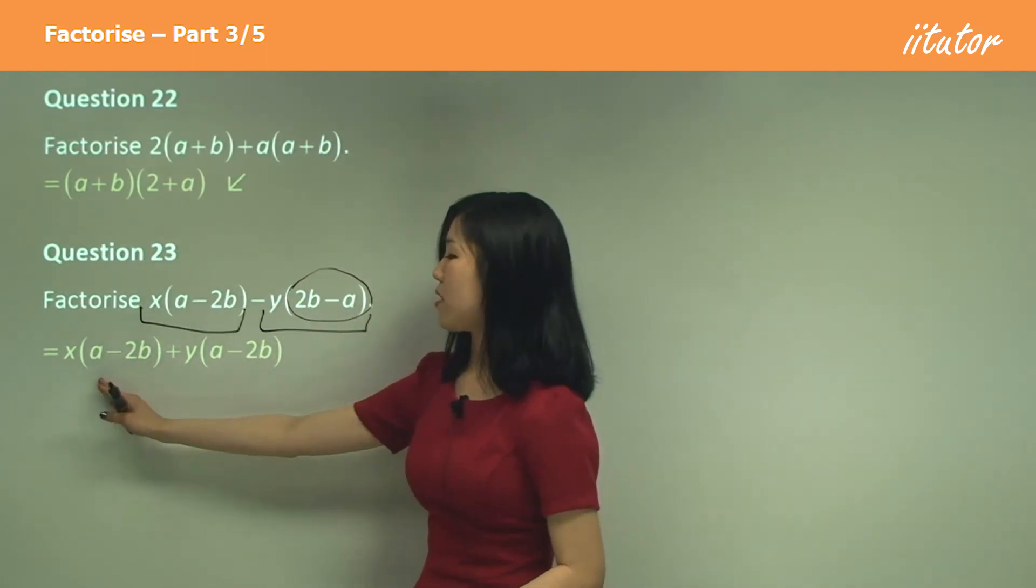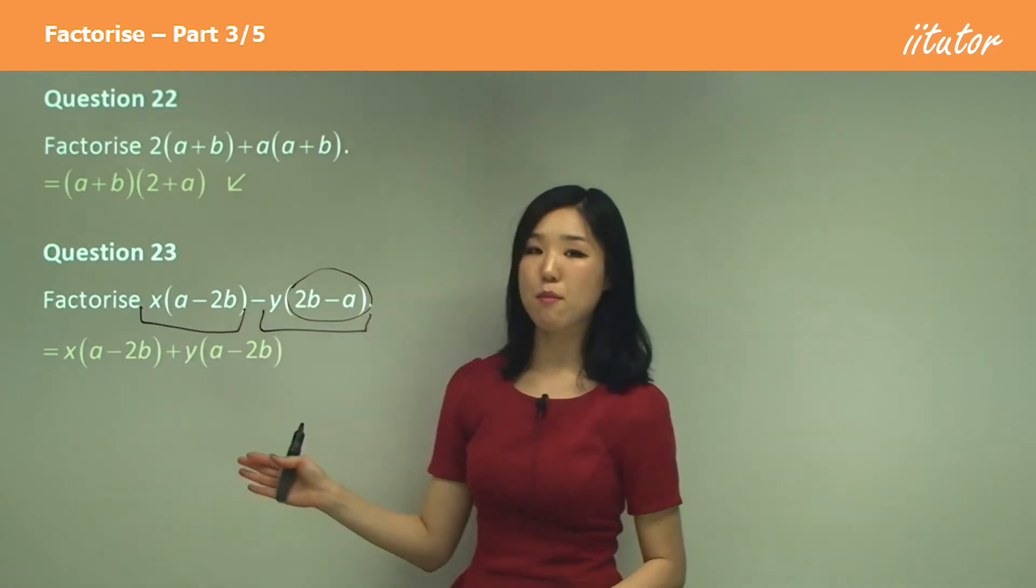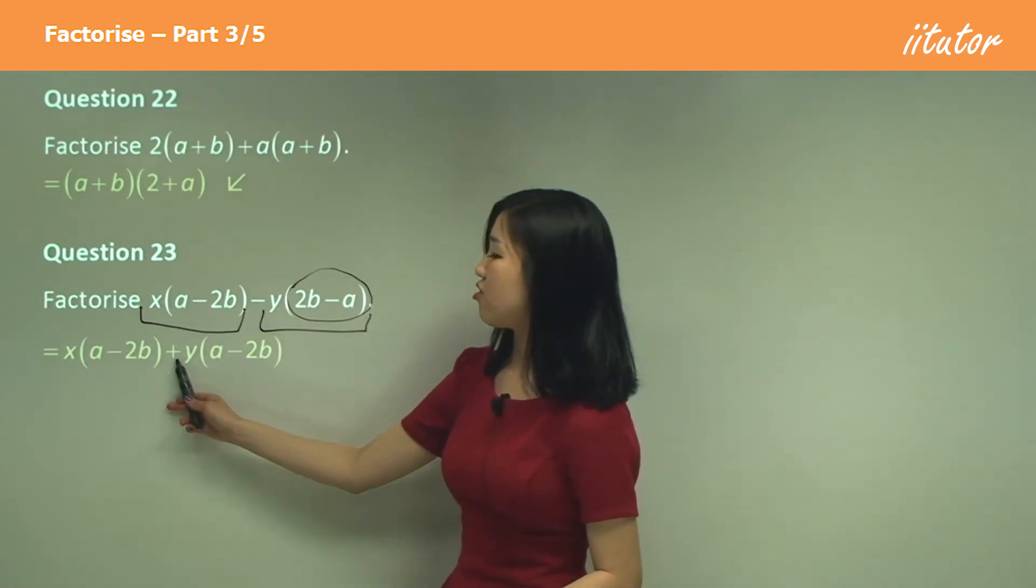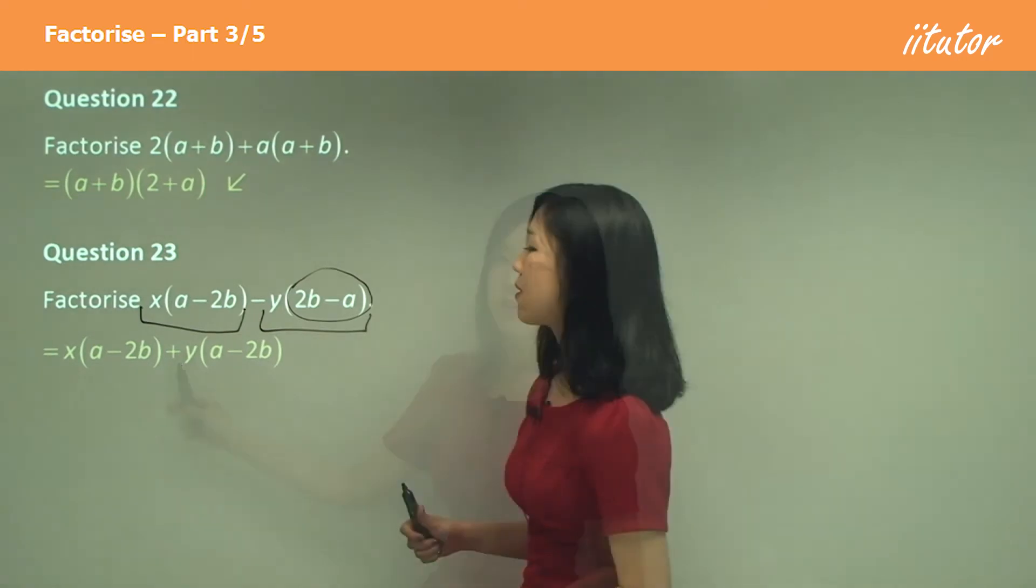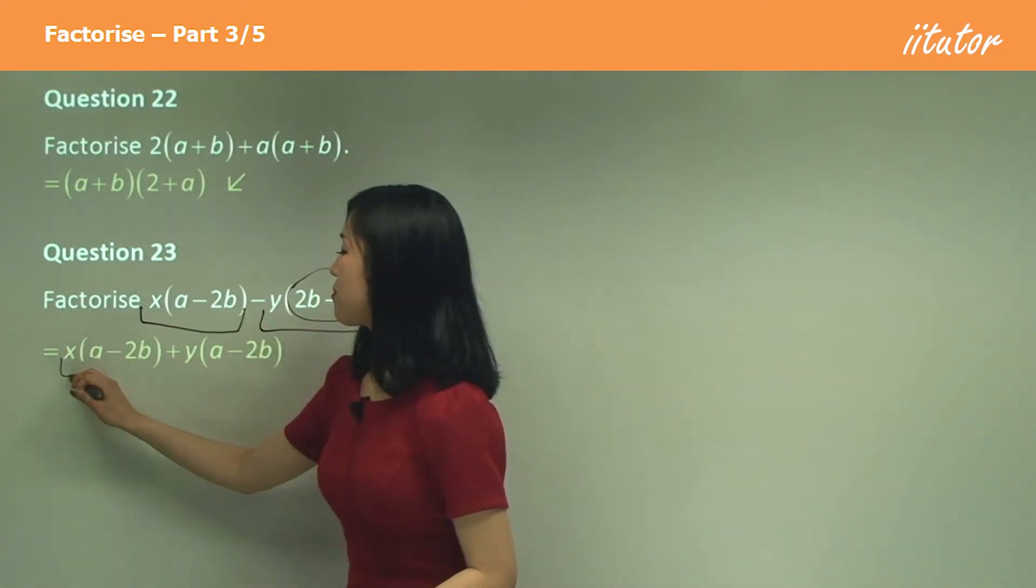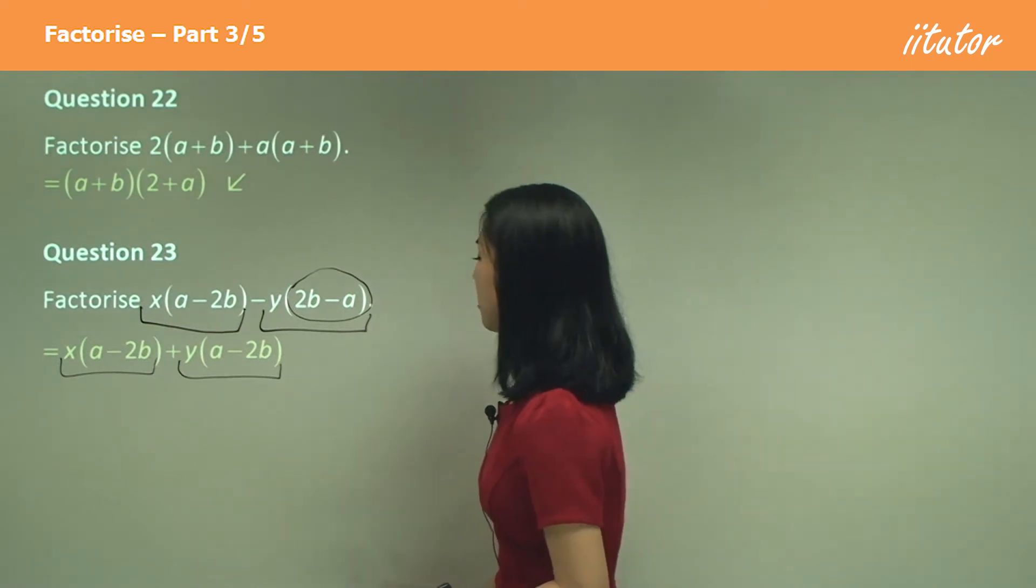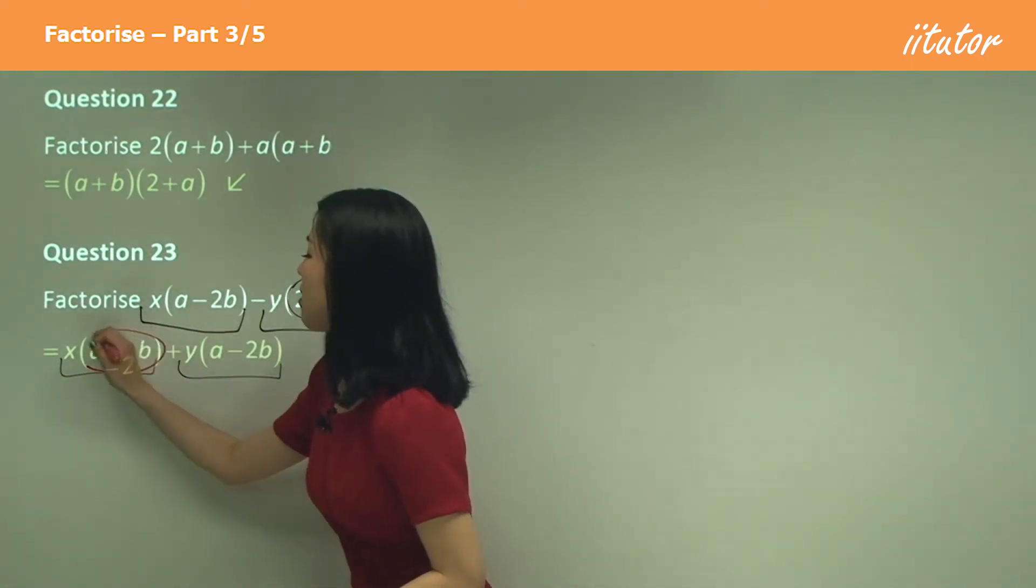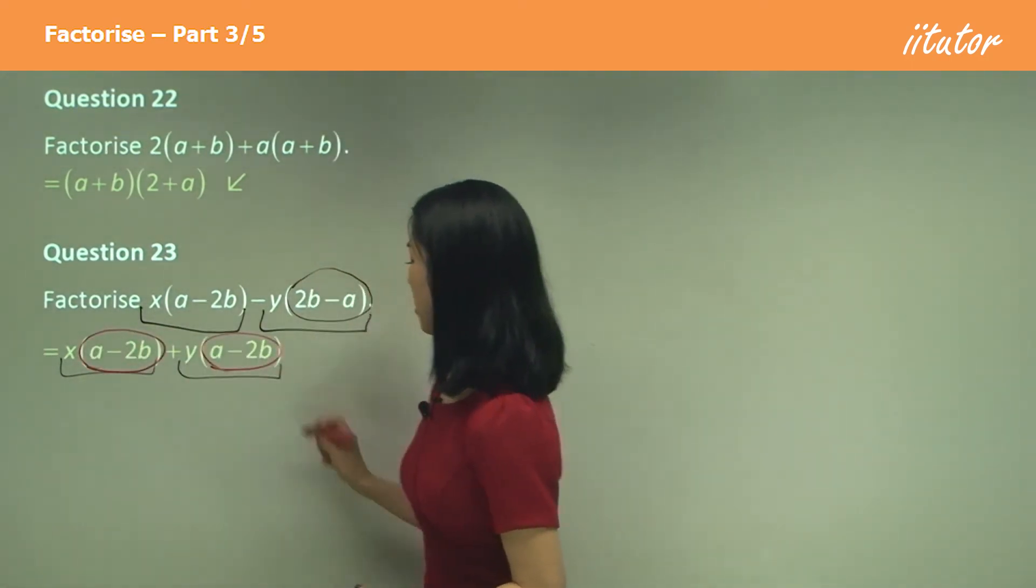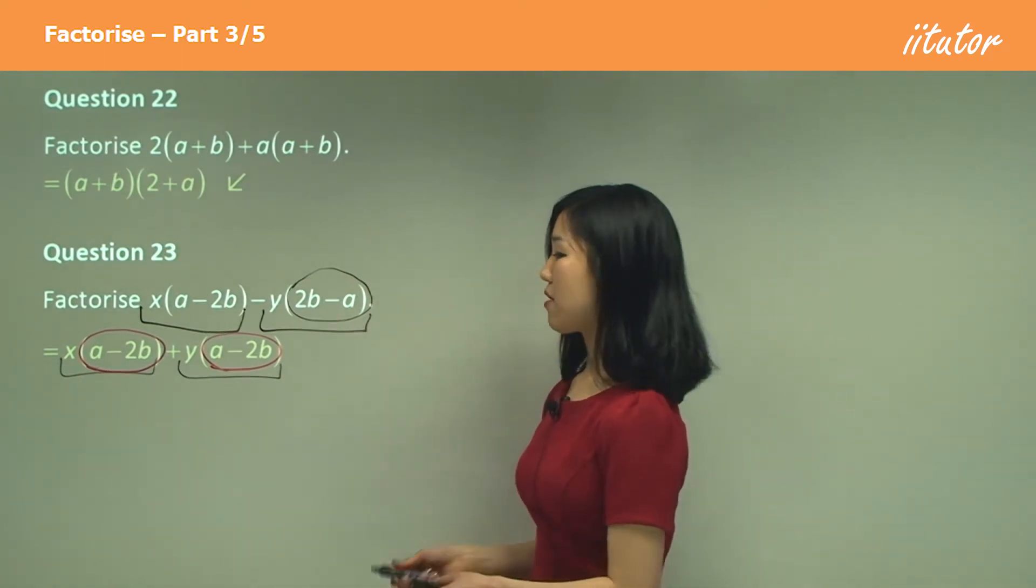So I made it the same a minus 2b. A minus 2b where that changes to a positive. So now you can see that from this term and this term a minus 2b is common. I'll use a different color. See how a minus 2b is common? So now we have a common factor.